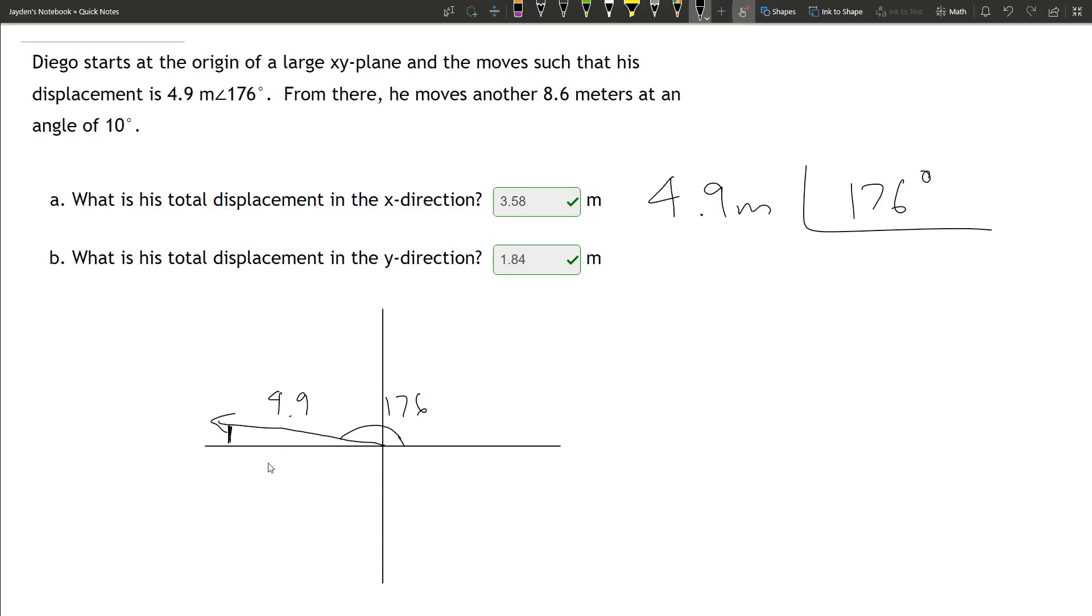This is the total distance of 4.9 meters. We can see that using trig cosine, which is adjacent over hypotenuse. Cosine of 176 is equal to adjacent over hypotenuse. Adjacent is x over hypotenuse, which we know is 4.9. We can move the 4.9 over and we get our x value.